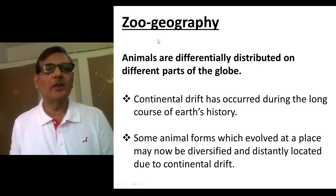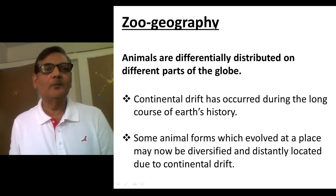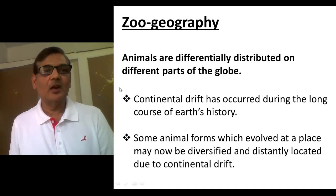When people deal with evolutionary aspects, they put forward several evidences with respect to organic evolution. They want to explain that the different forms of animals and plants have actually evolved during the long course of time. For that, Zoogeography is one of the evidences which they put forward. Zoogeography refers to the distribution of animals in different geographical areas, and that helps us understand the origin and evolution of animals.